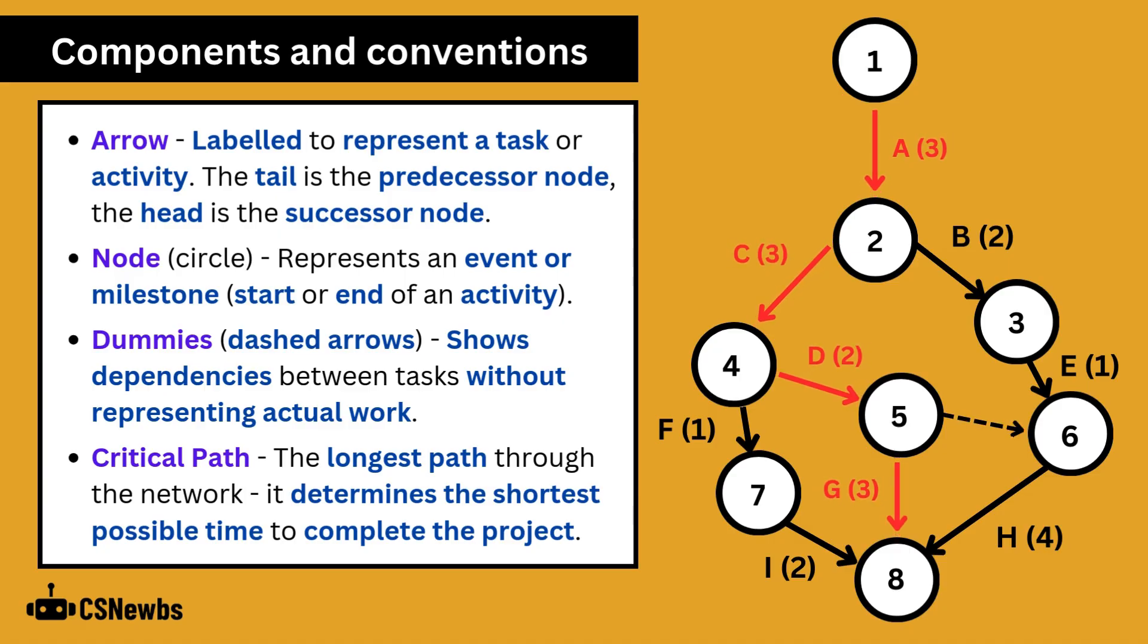The final component is the critical path. This is the longest path through the network and it determines the shortest possible time to complete the project. Again we'll look at these later and there is a separate project planning tool to analyze these. Be aware that very simple arrow diagrams may not actually show the critical path.